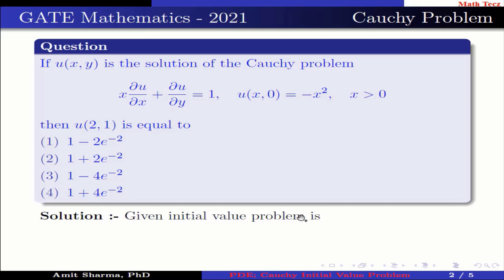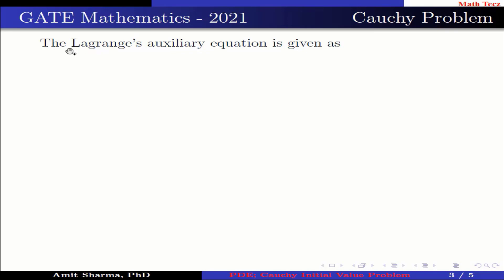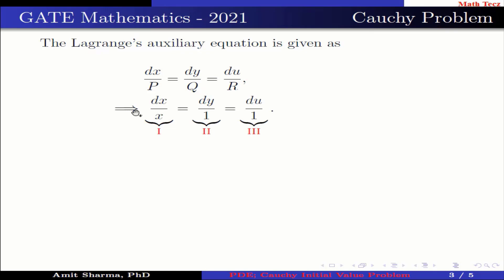The given initial value problem is x times ∂u/∂x plus 1 times ∂u/∂y equals 1. This implies the value of P is x, value of Q is 1, and value of R is 1. The Lagrange's auxiliary equation is given as dx/P equals dy/Q equals du/R, which implies dx/x equals dy/1 equals du/1.